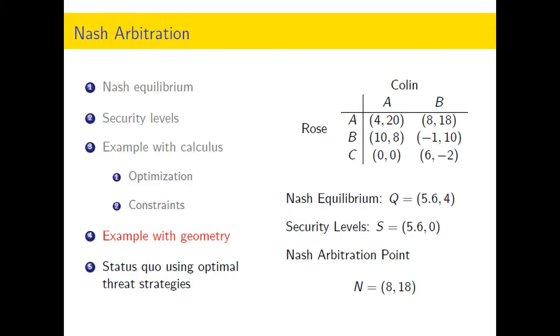I'd like to take a look at the geometry of these possible Nash arbitration points. We solved with calculus for the Nash arbitration point given a status quo point of 1,2 in the last video, but we have other situations.